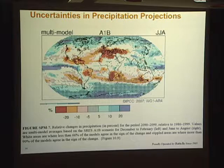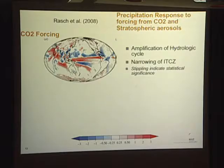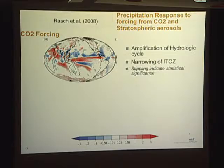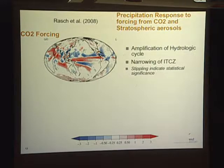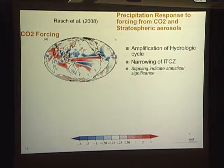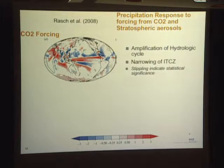We see these kind of signatures in our geoengineering simulations as well. From a review paper I wrote with Alan and others, I'm documenting the precipitation changes in our model for a doubling of CO2 — red areas indicating where precipitation increased with respect to a control simulation, and blue areas where it decreased. This is a familiar signature with a net increase in precipitation over the globe, an enhancement in the hydrologic cycle with increased precipitation in the tropical regions, decreased precipitation, and a narrowing of the ITCZ.